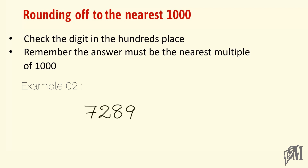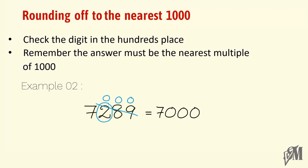Moving on to another example: 7289 to be rounded off to the nearest thousand. Here the digit in the hundreds place is 2. Since 2 is less than 5, we consider the digits 2, 8, and 9 to be 0 in the answer. Our answer becomes 7000. Decimal numbers can also be rounded off — let's see how to do that.